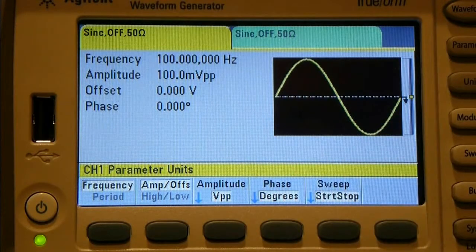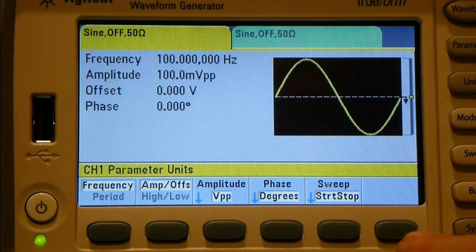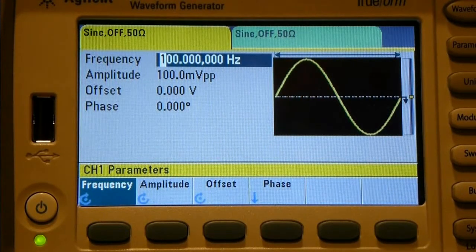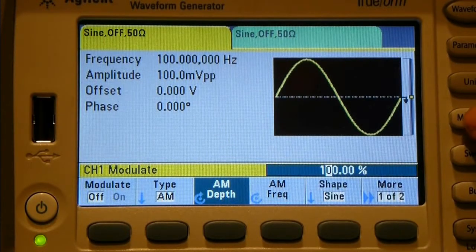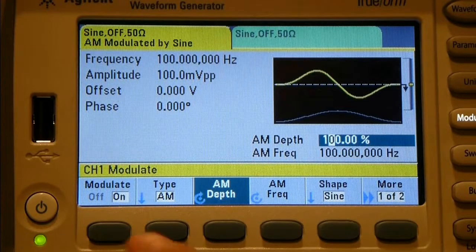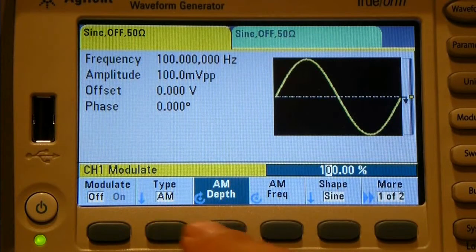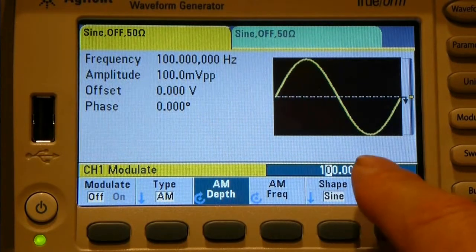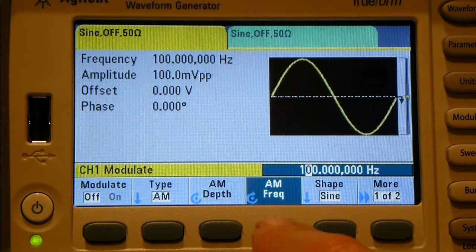We'll see how we go, but we'll hook up something to drive that as we go through the reviews and see what we can do with it. Going back to parameters again. Sorry, we were on to units, so we've just done units. Let's go down to the next one, modulate. Turn modulation on and off, so that's pretty straightforward.